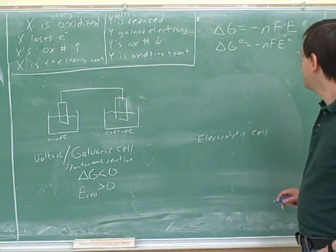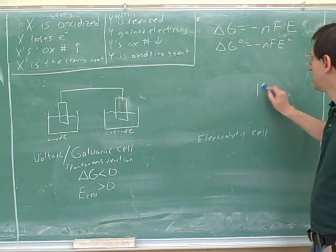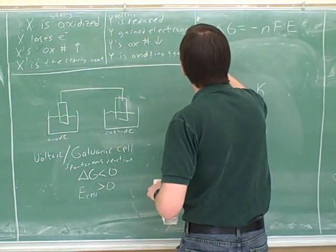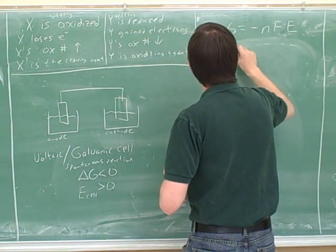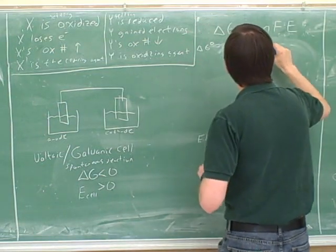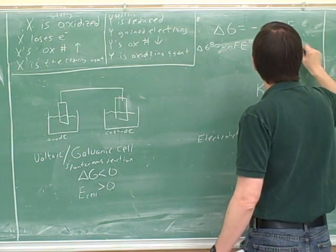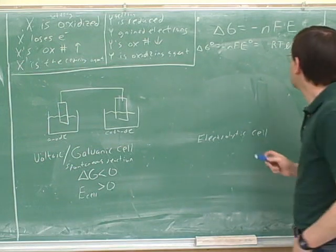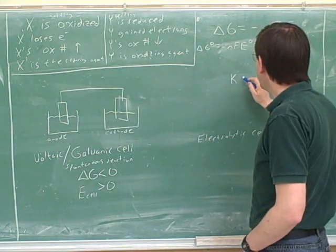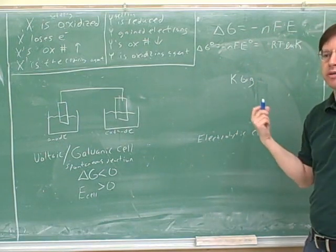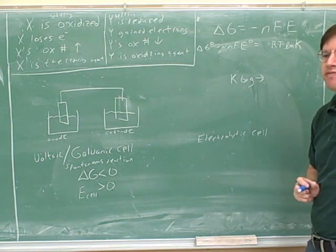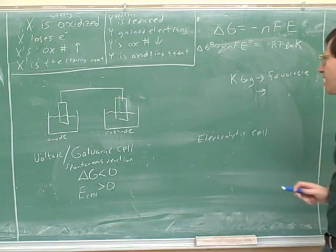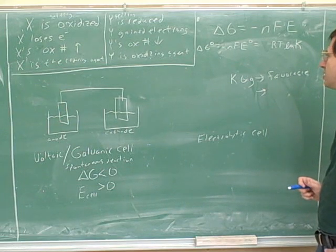All right. And as long as we're at it, we can also relate these terms to K, which is the equilibrium constant. So let's add that term in here. And let's figure out whether we need a positive or a negative sign here. Well, if K is big, does that mean that the equilibrium lies far forward or far reverse? Forward. Yeah. So does that mean that the reaction is favorable or unfavorable? Favorable. A favorable reaction. If the reaction is favorable, should that give us a negative or a positive delta G? Negative. Yeah.